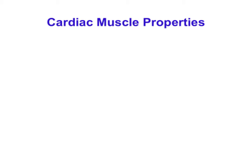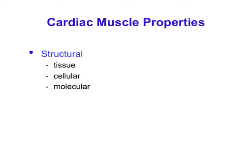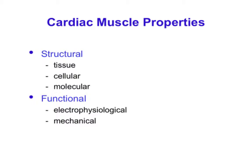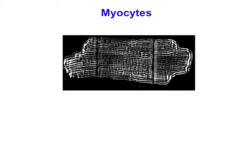Today we're going to talk about cardiac muscle, which has many properties in common with skeletal muscle, but some that are different. I'll summarize briefly the main structural differences between cardiac and skeletal muscle, the main functional differences—both electrophysiological and mechanical—and then some important experimental differences involved in testing cardiac versus skeletal muscle.